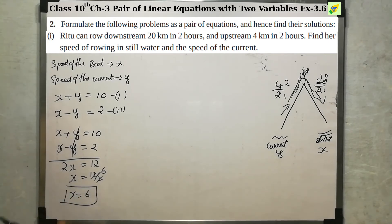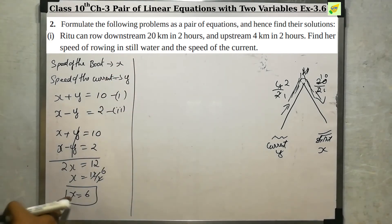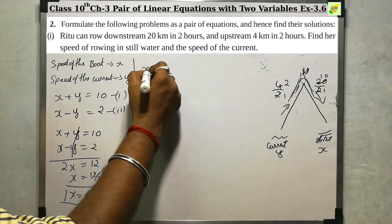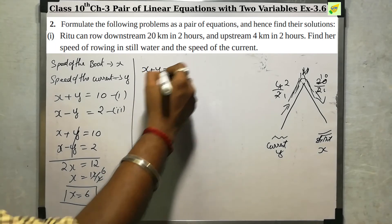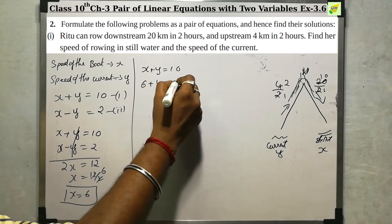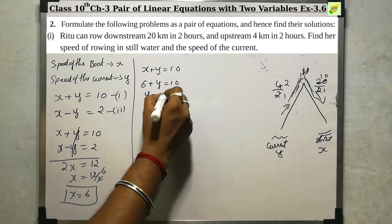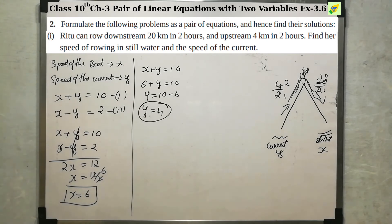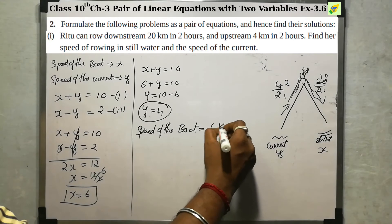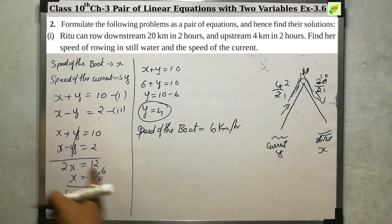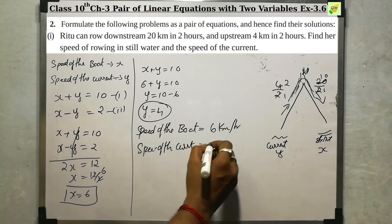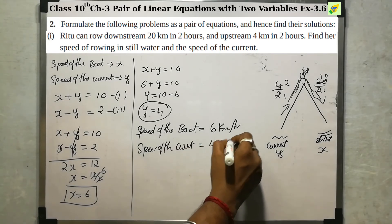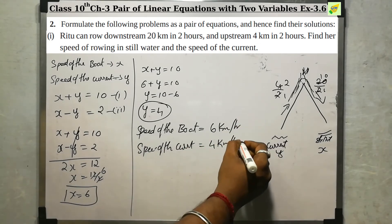The boat's speed is 6 kilometers per hour. Now, substituting into x plus y equals 10: with x equal to 6, y equals 10 minus 6, so y equals 4. Therefore, speed of the boat equals 6 kilometers per hour and speed of the current equals 4 kilometers per hour. This is the answer.